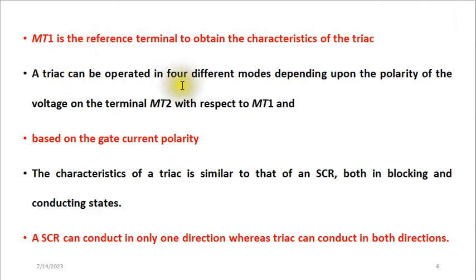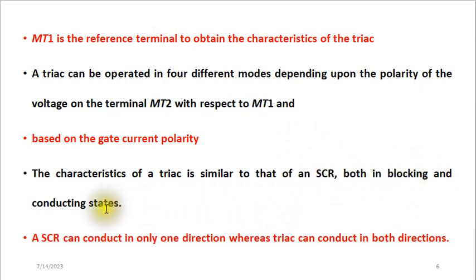The TRIAC can be operated in four different modes. To push it into conduction, there are four modes divided based on the polarity of the voltage at MT2 with respect to MT1, and based on the polarity of the gate current — whether positive or negative. The current-voltage characteristic of the TRIAC is similar to that of the SCR, but the key difference is that the SCR conducts in only one direction while the TRIAC is bidirectional and can conduct in two directions.